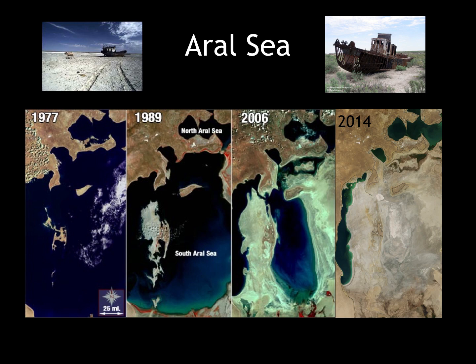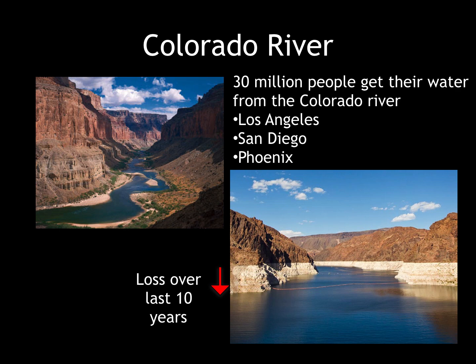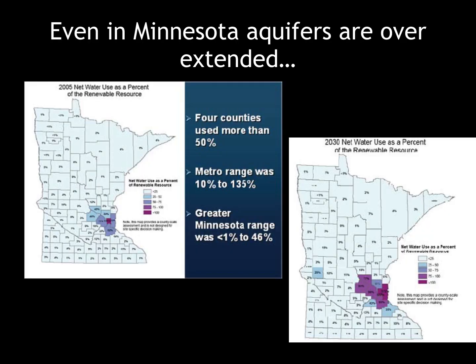Similarly, water depletion can also be seen in the United States. The water rights to the Colorado River are misallocated. The river should flow into the Gulf of California near Baja California, but because of extreme water demands in Nevada, Arizona, and California, especially for agriculture, the water now only trickles into Mexico and does not make it all the way to the Gulf anymore. There are more than 20 dams on the Colorado River. Even in Minnesota, aquifers are overextended, and we can see that we're using an unsustainable amount of water.